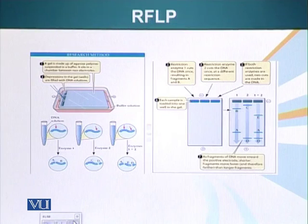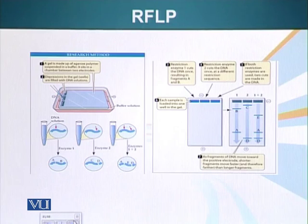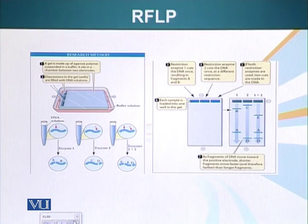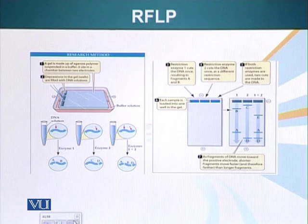RFLPs basically means restriction fragment length polymorphism. Restriction means the fragment generated by an endonuclease. Length polymorphism basically means more than one shape or more than one form. When mutations or changes occur in DNA, they can actually add or remove restriction sites — those palindromic sites where restriction enzymes can cut.